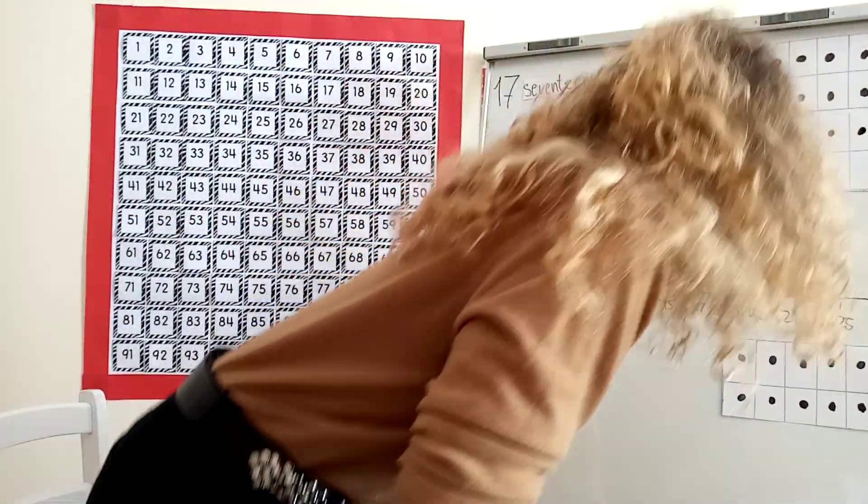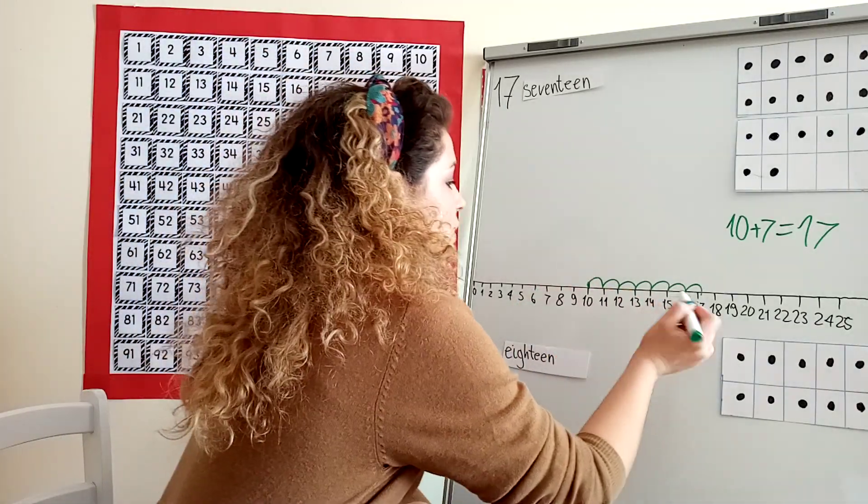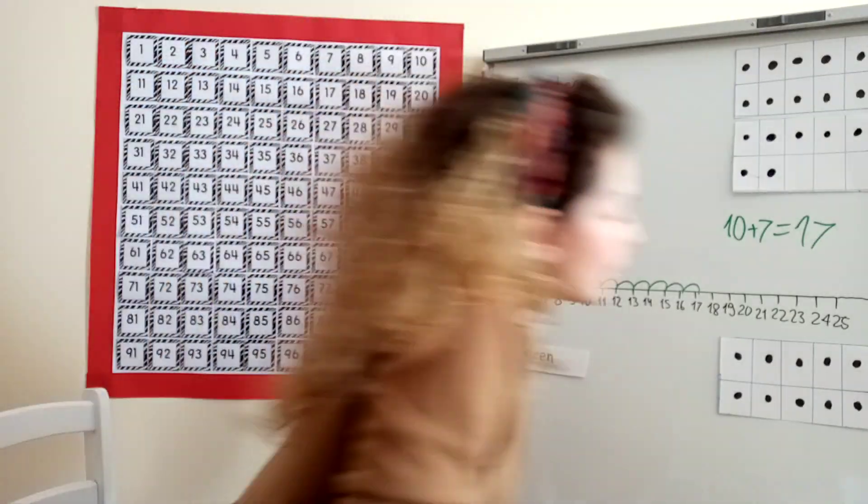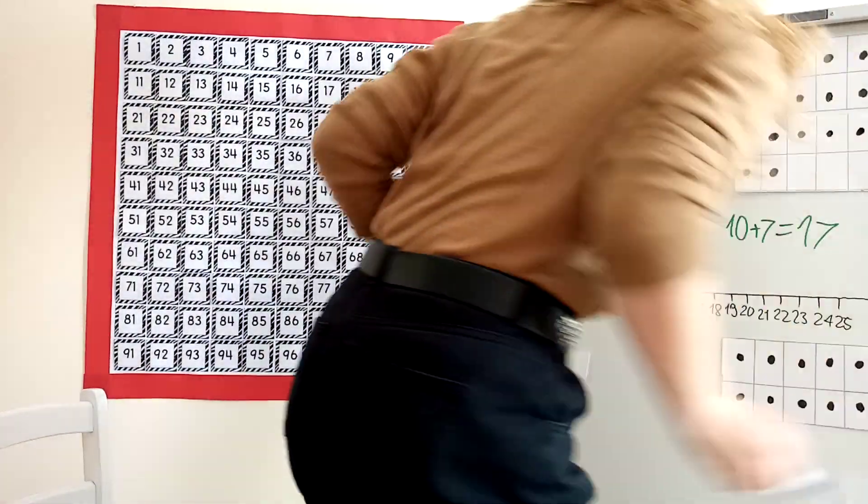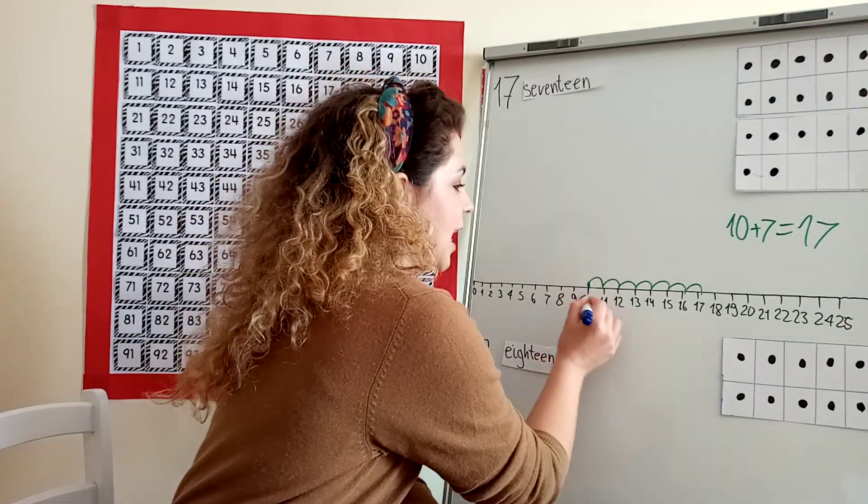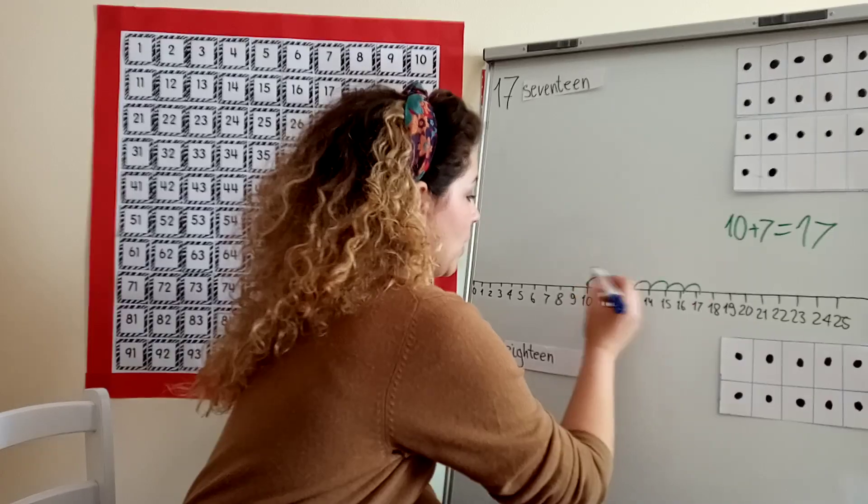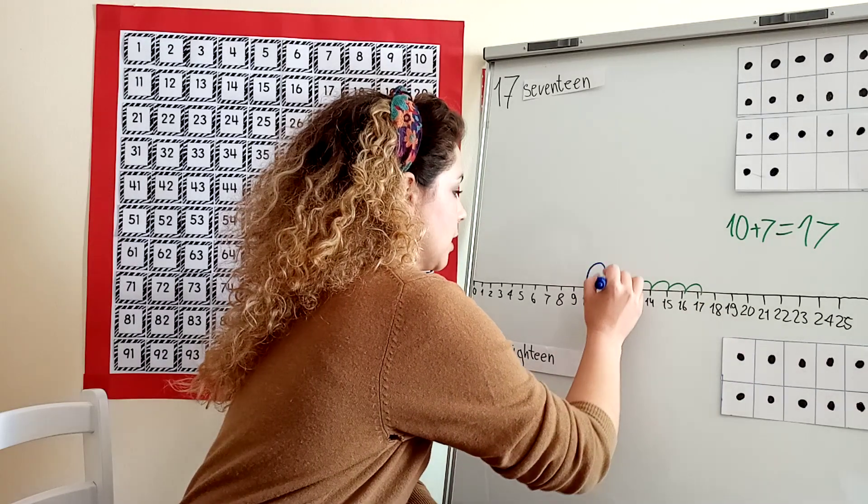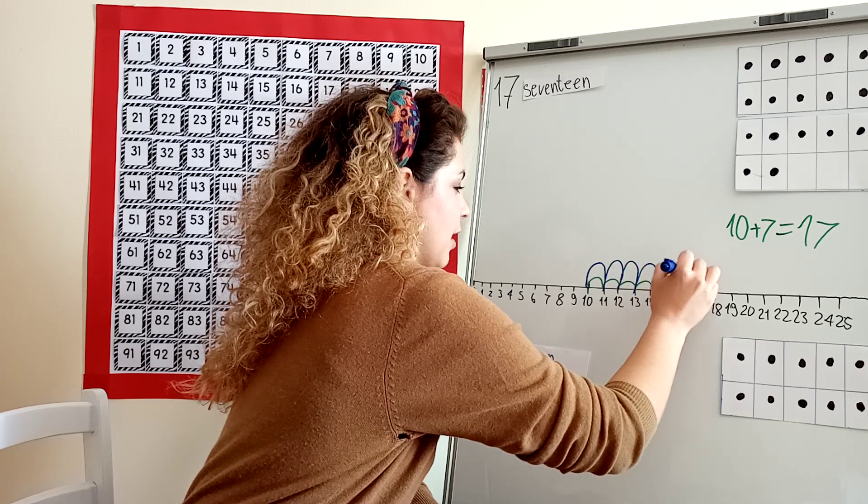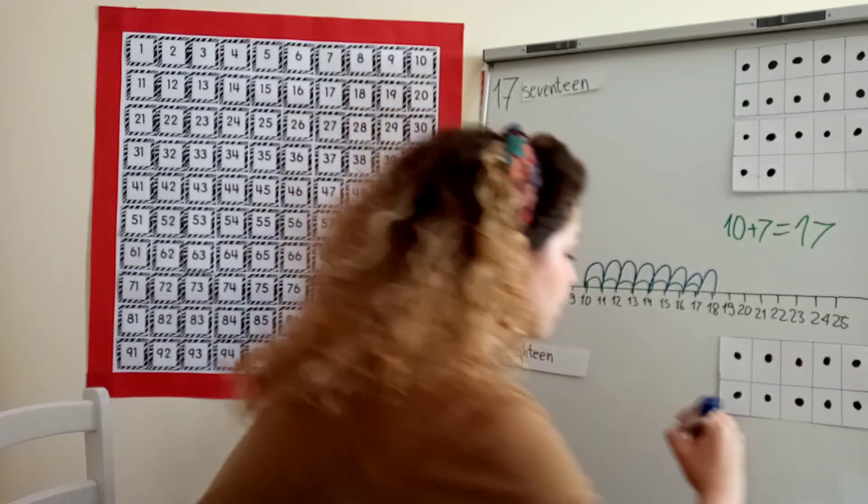Now let's see here, how about 18? I'm going to take a different color marker and I'm just going to make taller hops, but they still count as one. So I start from 10 because here I have 10, and I want to get to 18. So 1, 2, 3, 4, 5, 6, 7, 8. So it took me eight hops.